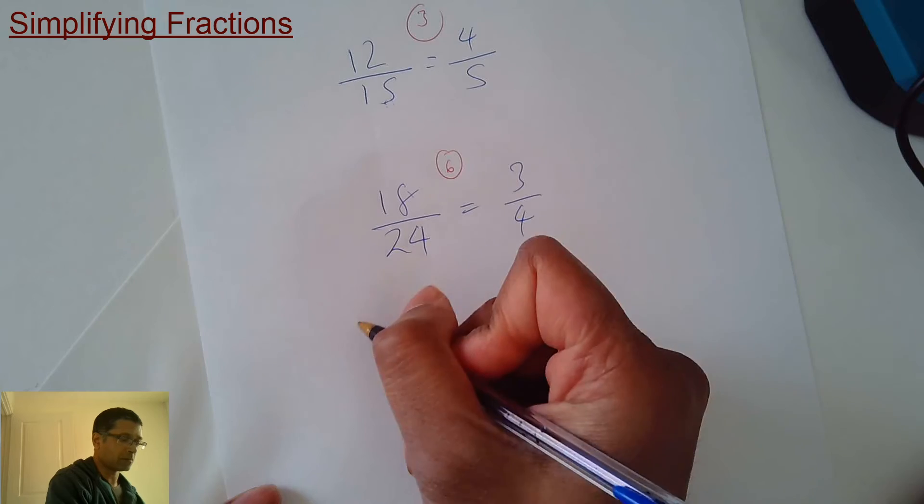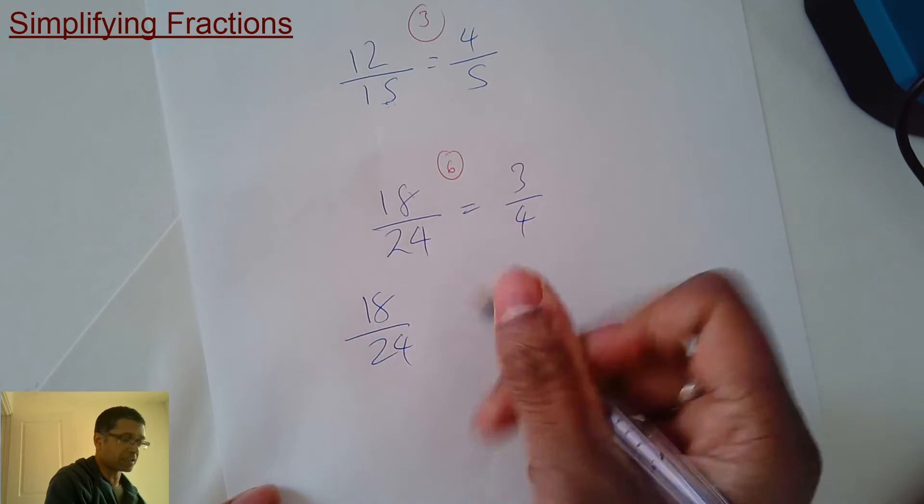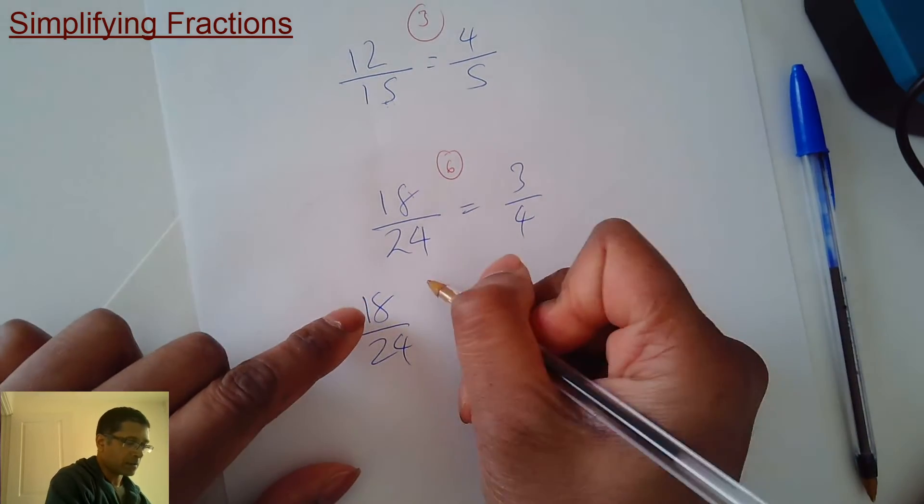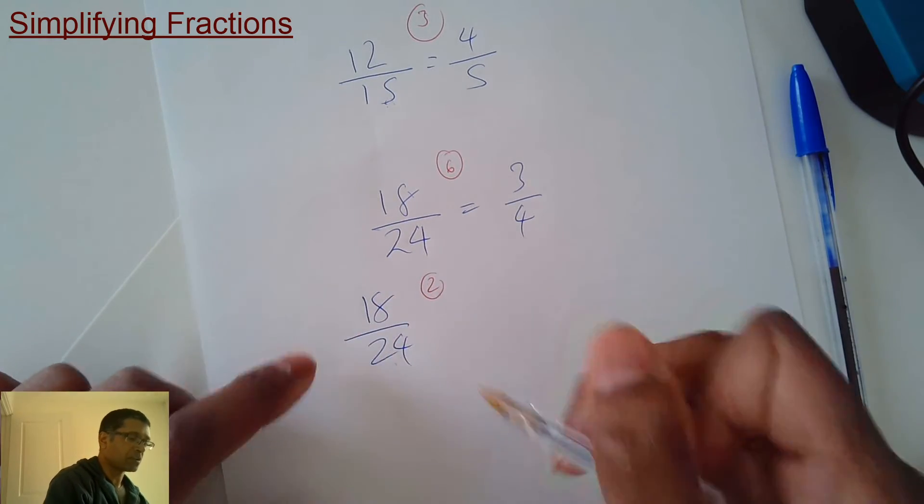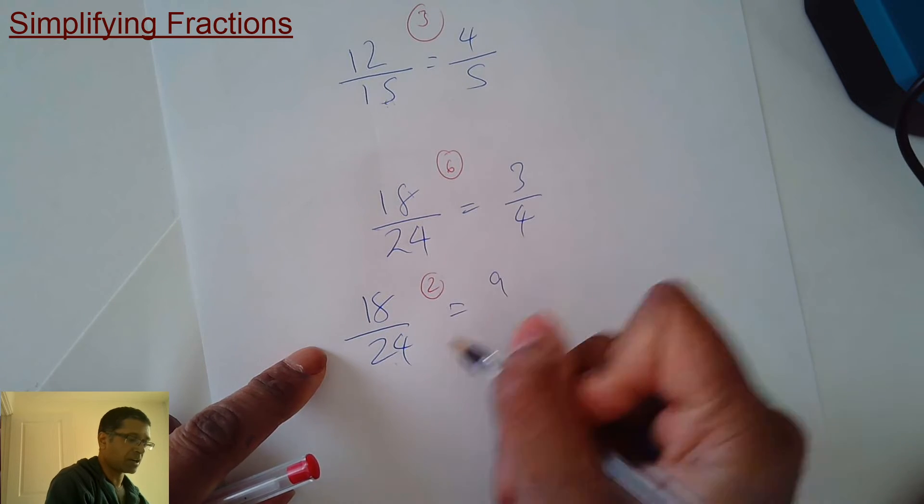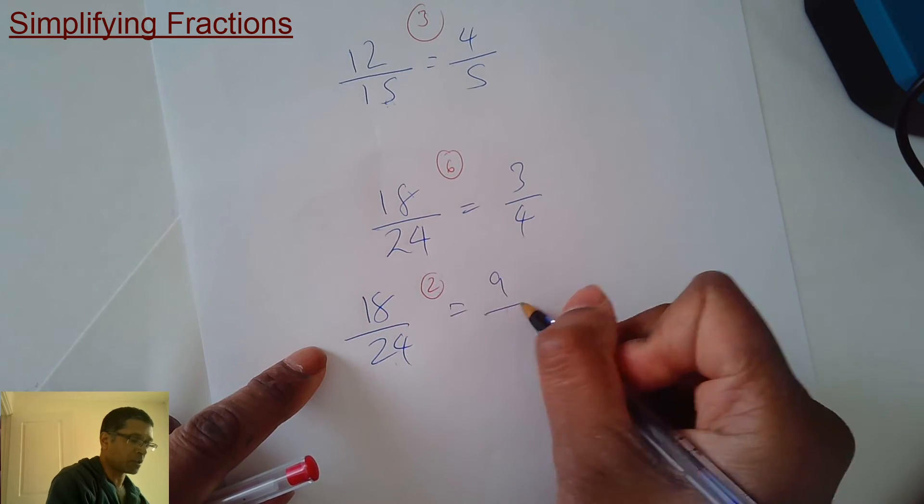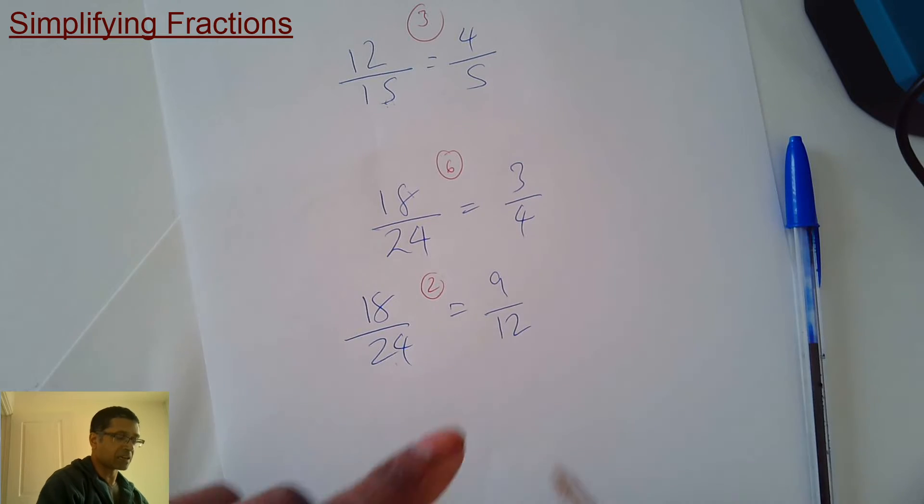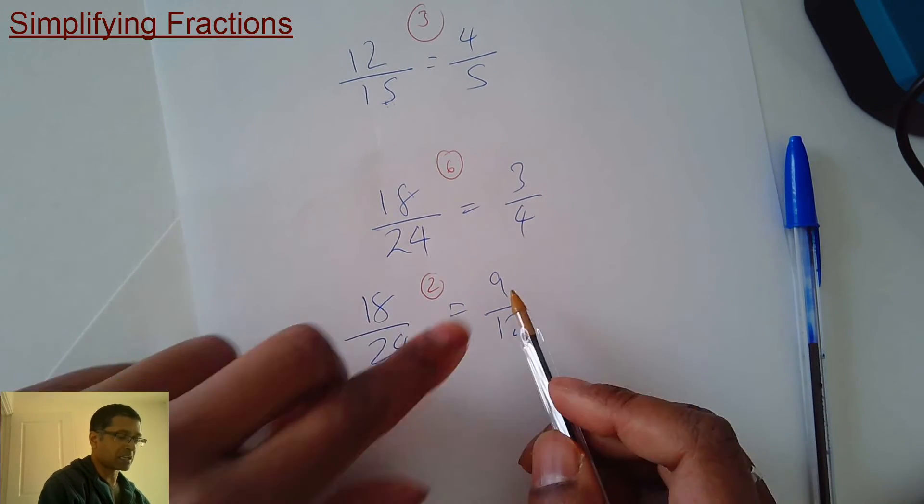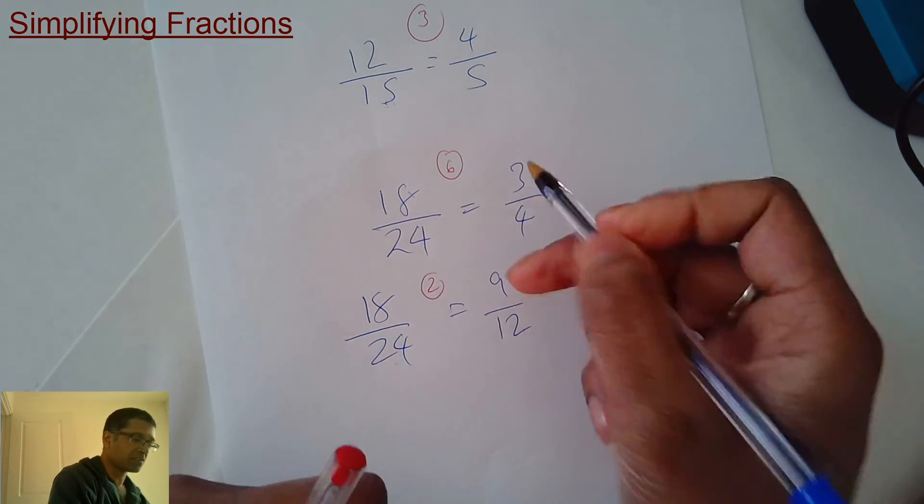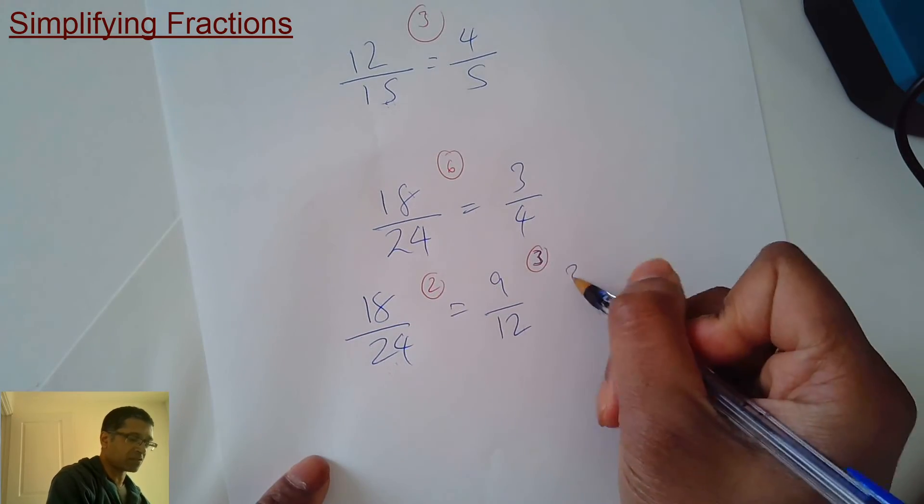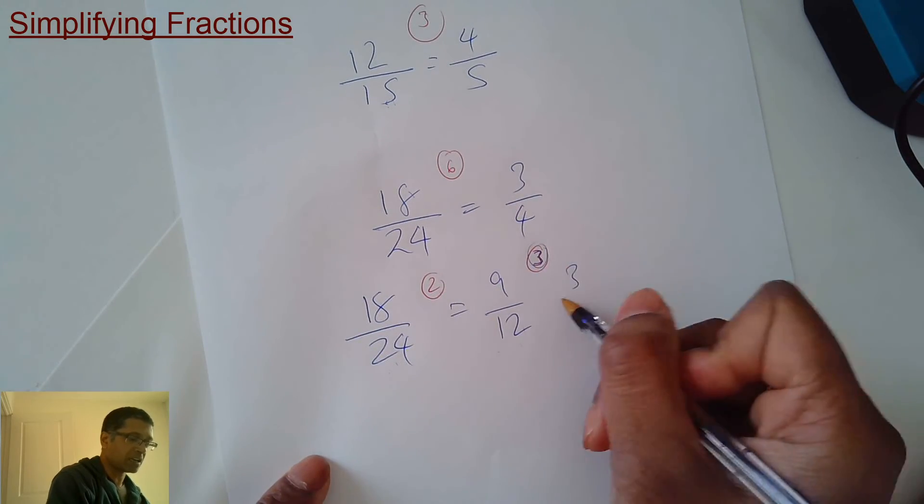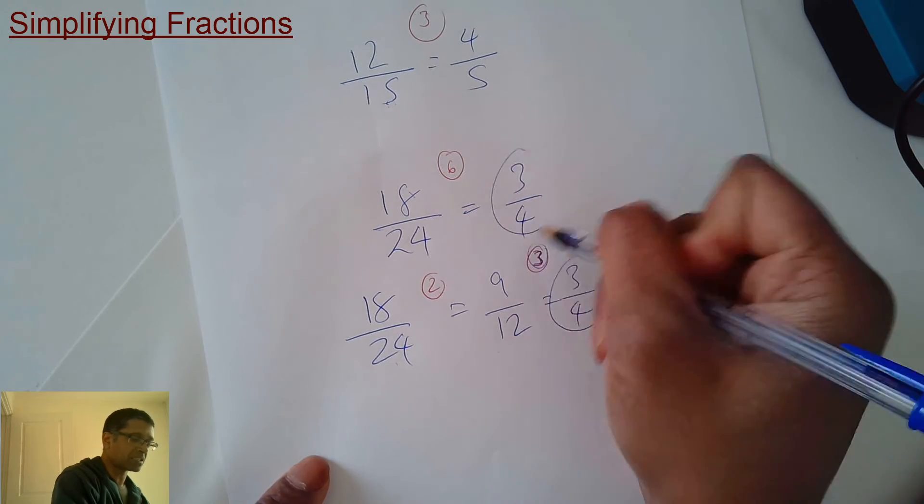But some people would have taken a bit longer to get there. Some people would have said, oh, you've got 18 which is in the 2 times table, 24 is in the 2 times table. So you could do 18 divided by 2 is 9, 24 divided by 2 is 12. But there is something that goes into 9 and 12. Which times table has got 9 and 12 in it? It's the 3 times table. So 9 divided by 3 is 3, 12 divided by 3 is 4. The same answer, but it's taking a bit longer.